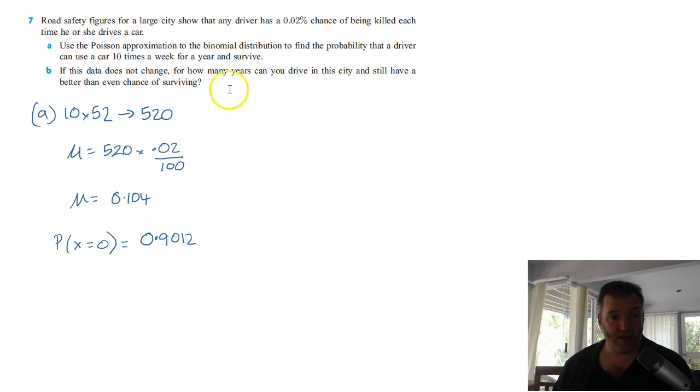If this data does not change, for how many years can you drive in this city and still have a better than even chance of surviving? So now we want to know, when does the probability of X being less than or equal to a number end up less than 0.5.